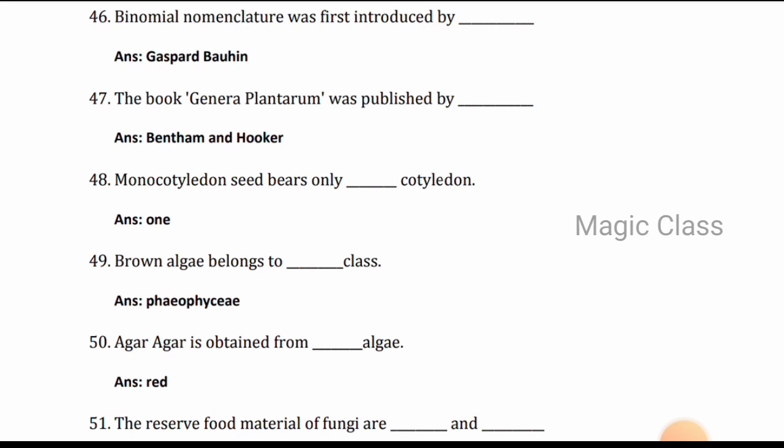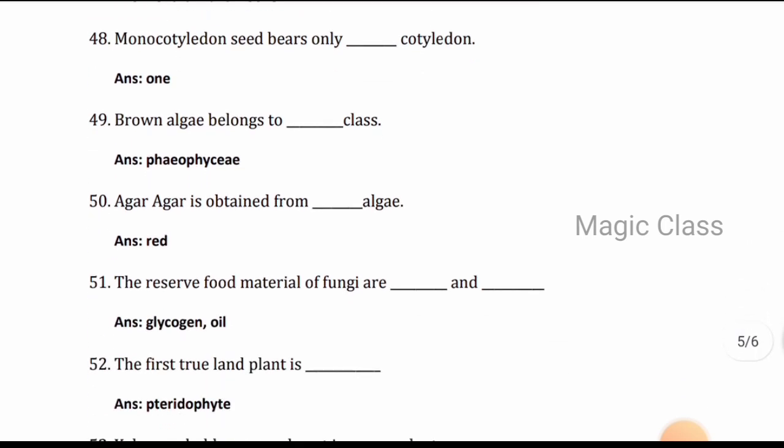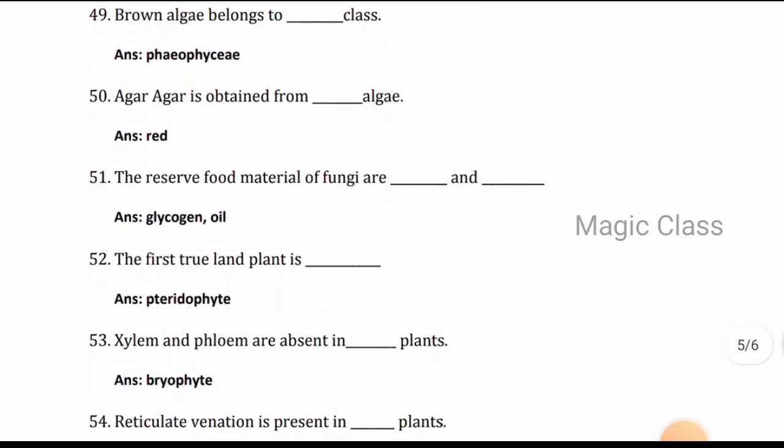Question 47: The book Genera Plantarum was published by Bentham and Hooker. Question 48: Monocotyledon seeds bear only one cotyledon. Question 49: Brown algae belongs to the class Phaeophyceae.